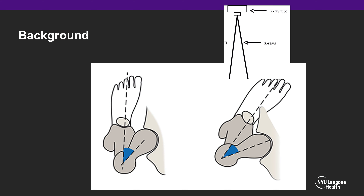The traction internal rotation view not only helps to clarify the fracture pattern and provide a preliminary assessment of how your reduction will appear on the fracture table, but one of the other main advantages is that the internal rotation component brings the proximal femur into a true AP view due to the anteversion of the femoral neck.